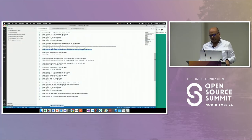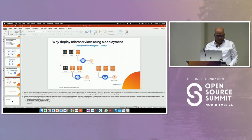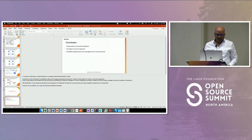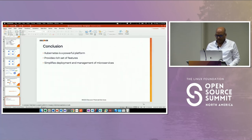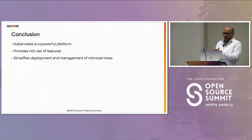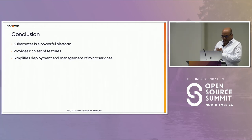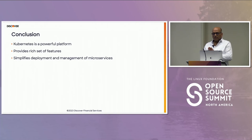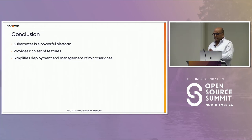That was the end of the demo. In conclusion, Kubernetes is a powerful platform for managing containerized microservices or applications at scale. It provides a rich set of features for orchestrating, scaling, and managing containerized microservices, making it an ideal platform for modern cloud-native applications. Some of the features we discussed were service discovery, load balancing, configuration management, secrets management, automation, resiliency, rollout, rollback, automatic bin packing, self-healing, and more. With Kubernetes, you can simplify the deployment and management of containerized microservices, ensuring they are always available and responsive to incoming traffic.